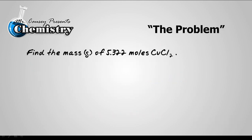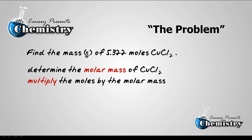All right, the problem: find the mass in grams of 5.322 moles of copper(II) chloride. So we're going to go moles to grams, and we're going to need to use molar mass. The first thing I need to do is determine the molar mass of copper(II) chloride, and then I need to multiply the moles by the molar mass. All right, to the magic blackboard.